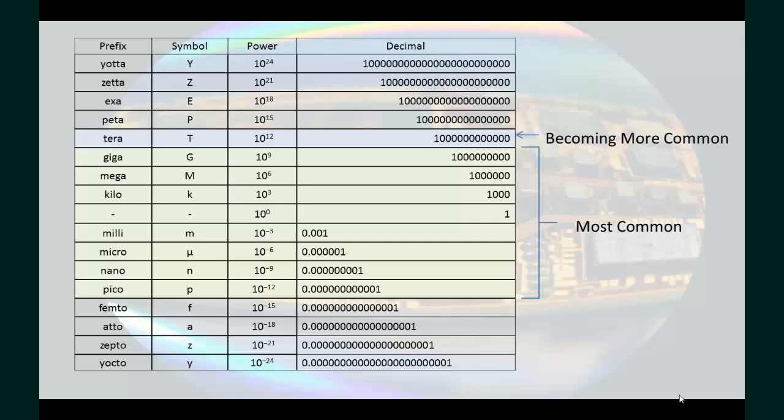Now, as it applies to the example earlier, 0.01 amps, written in scientific notation, would be 10 times 10 to the negative 3 amps. The prefix that is used for 10 to the negative 3 is milli, so this can be written as 10 milliamps.